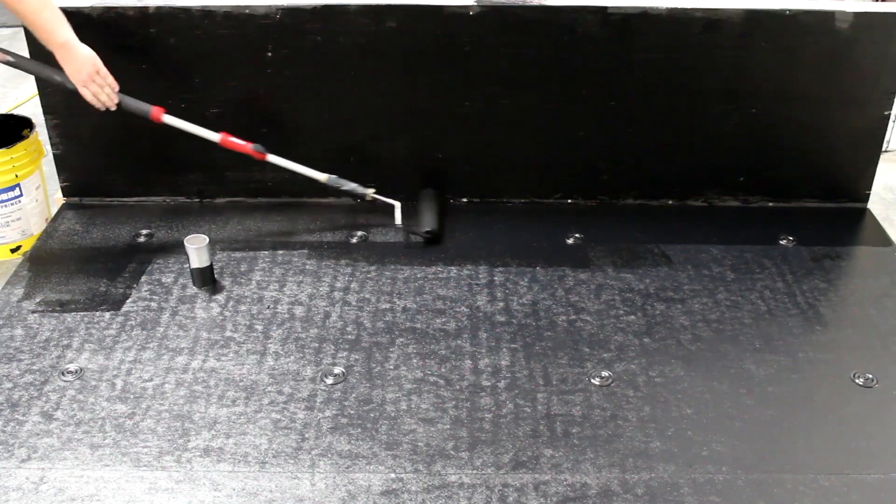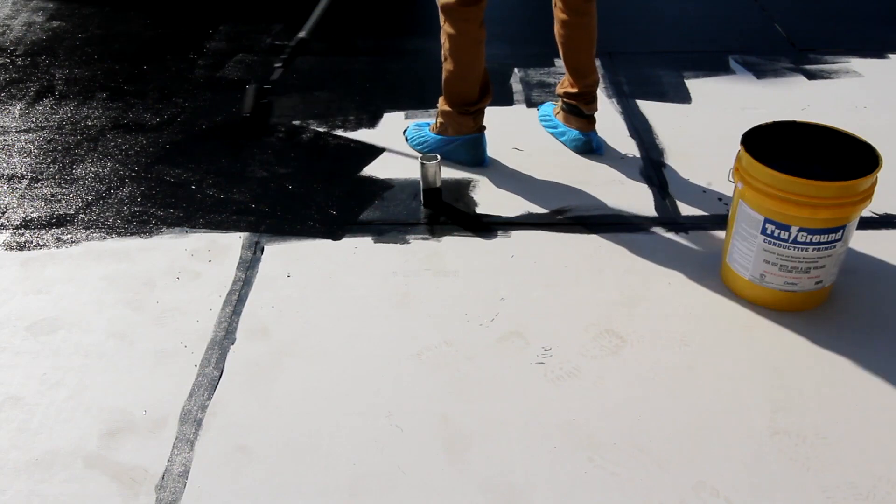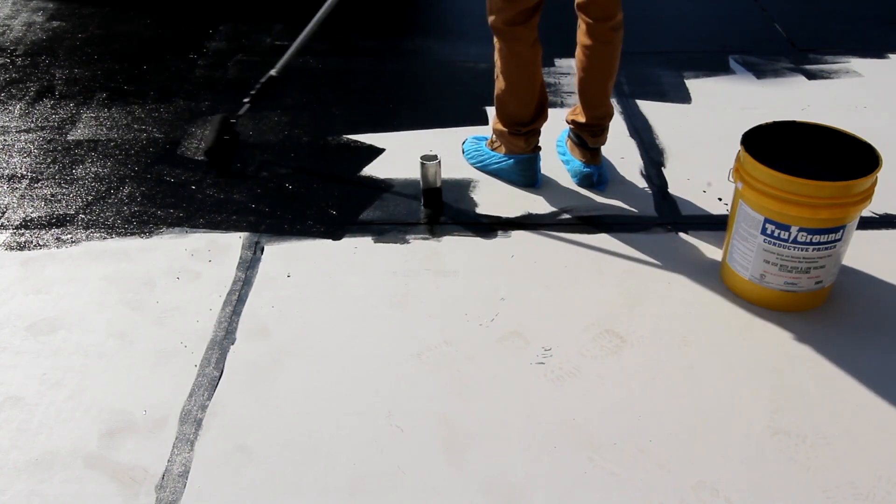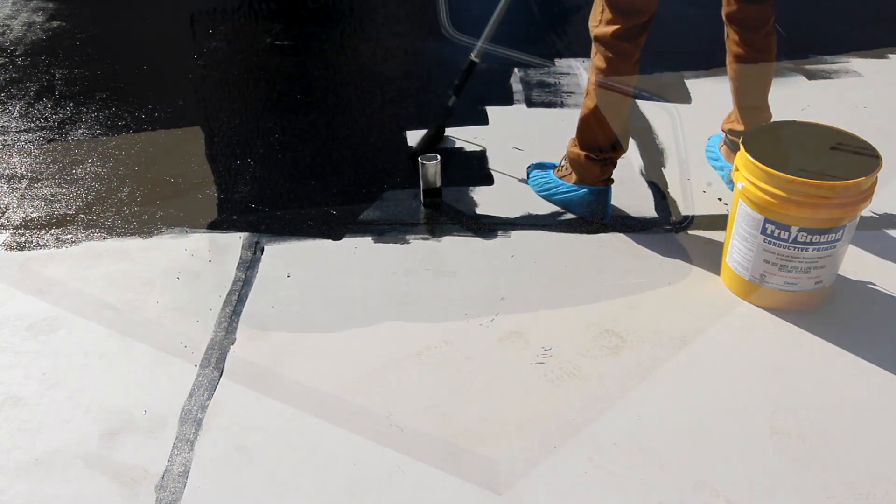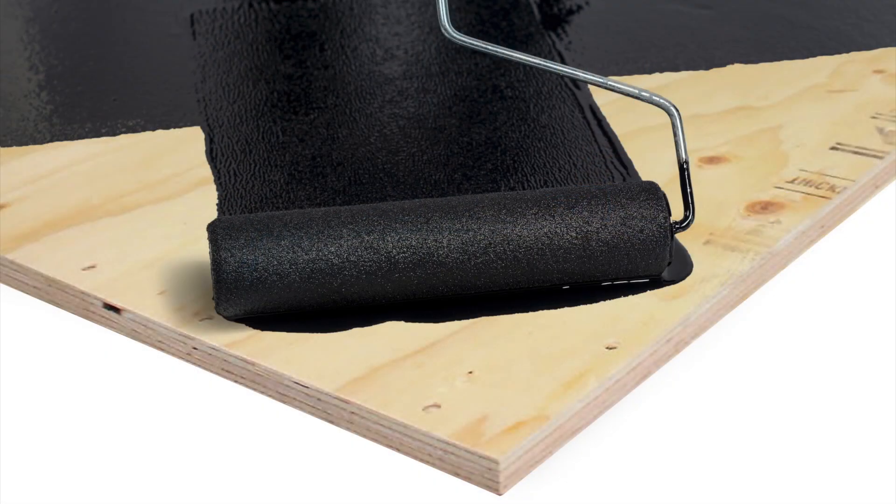True Ground comes in 5-gallon pails that cover approximately 1,250 square feet on most cover boards and closed-cell insulations in a single-coat application. Porous substrates, such as wood, require two coats for proper coverage.